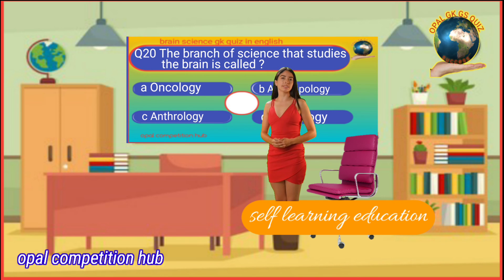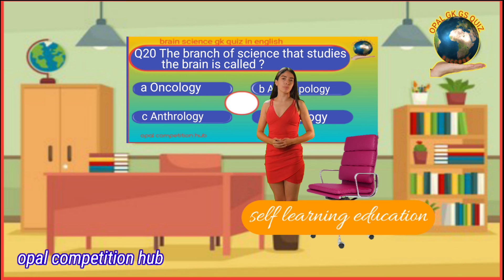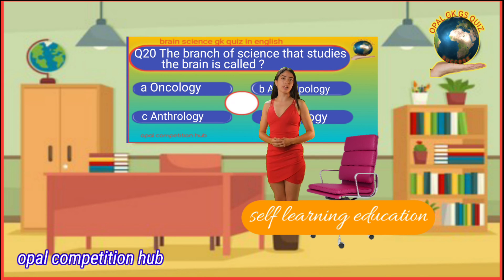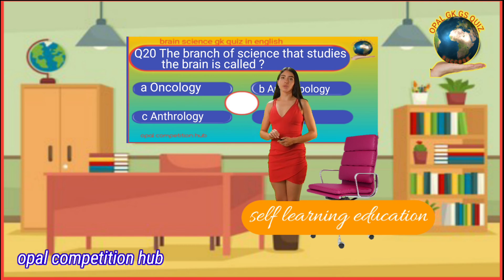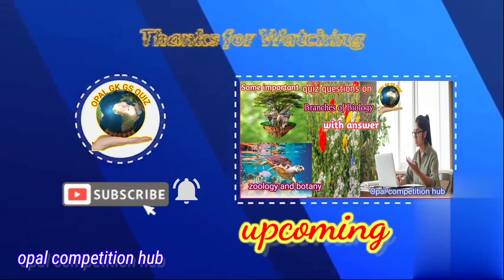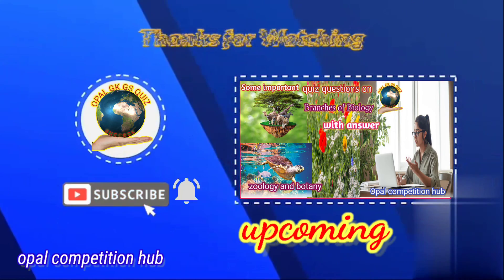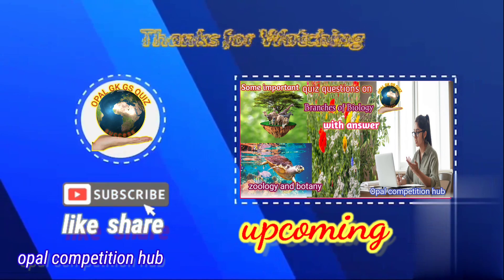Question number 20: The branch of science that studies the brain is called what? Option A: Oncology. Option B: Anthropology. Option C: Anthology. Option D: Neurology. Your time starts now. Your answer will be Option D: Neurology.